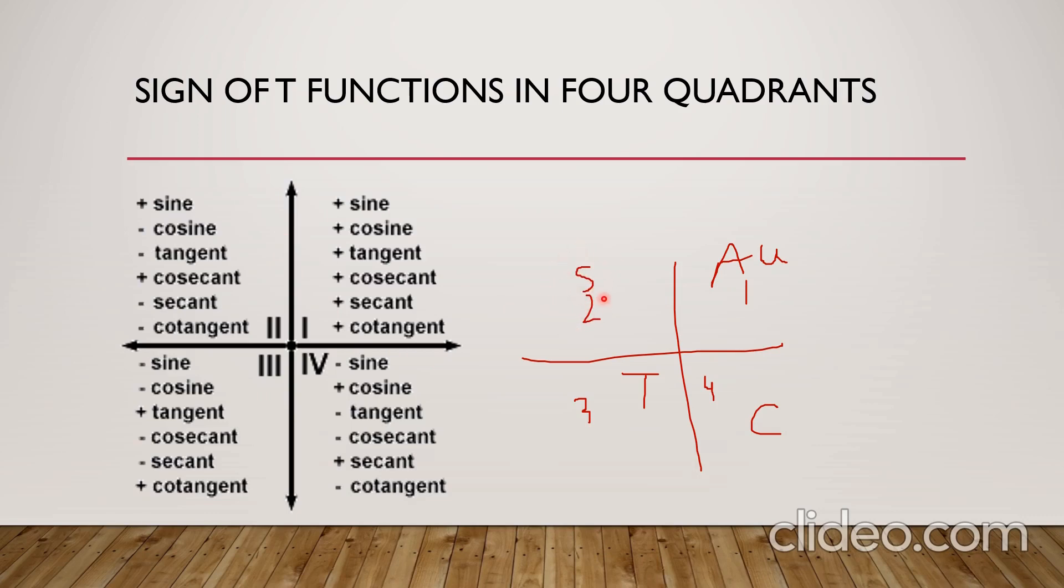In the second quadrant, it is the home of S. S means sine. In the second quadrant, only sine will be positive and sine's reciprocal cosec is positive. The other four ratios will be negative. In the third quadrant, tan is positive. Tan and cot are positive, the other four are negative. In the fourth quadrant, cos and sec are positive, the other four are negative.